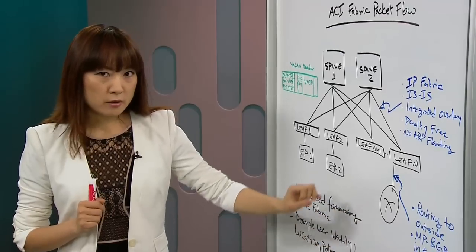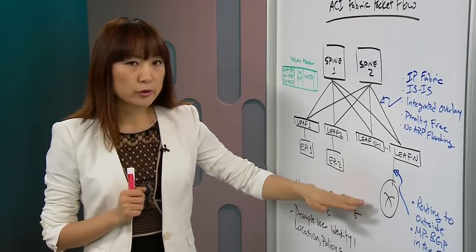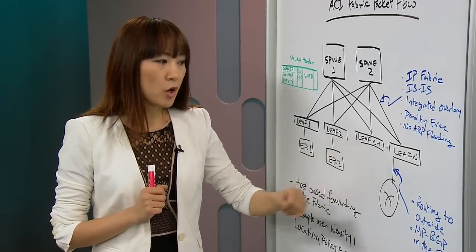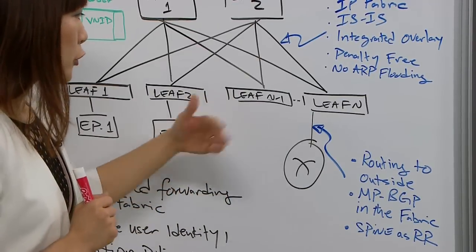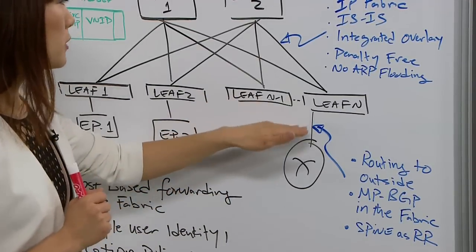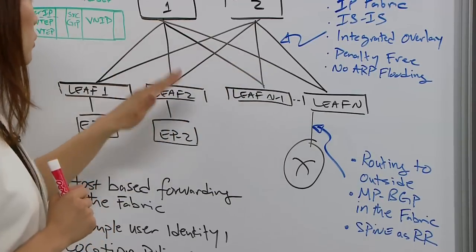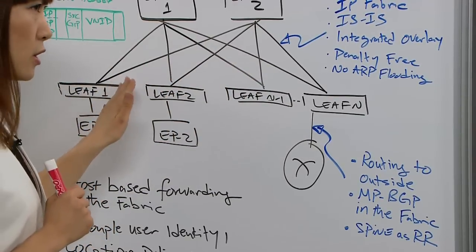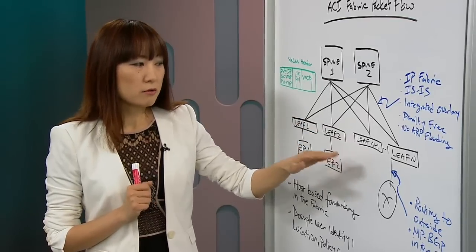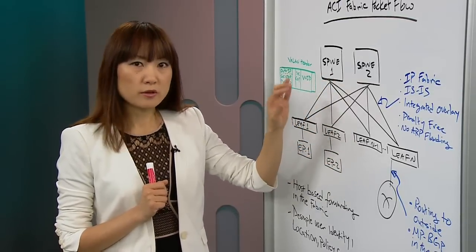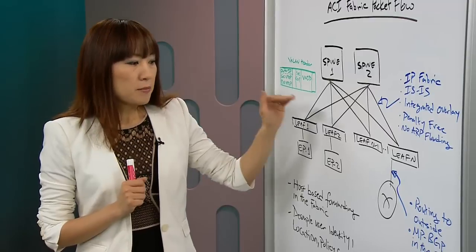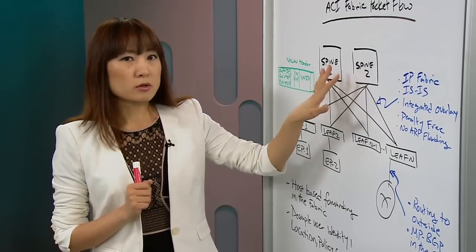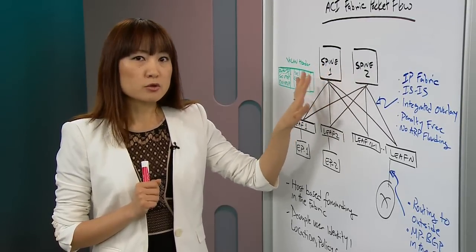To the outside, we can run routing protocols to learn outside prefixes or we can do static routes. The outside learned routes will be populated into the Fabric or to other leaves which need the information through MPBGP within the Fabric. In the MPBGP topology, spine nodes will function as route reflectors.